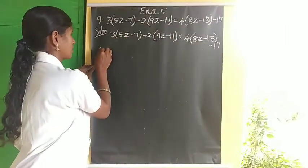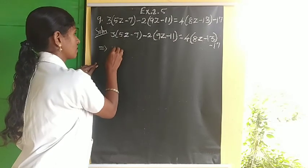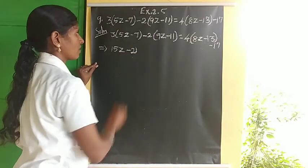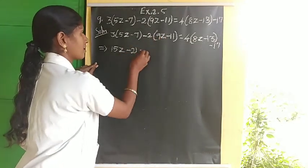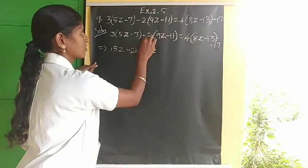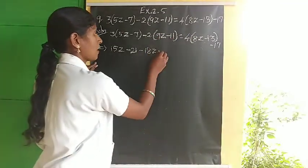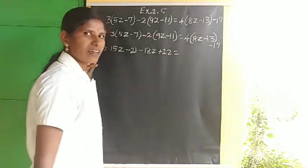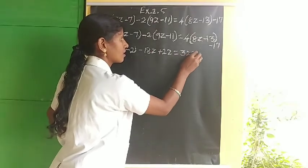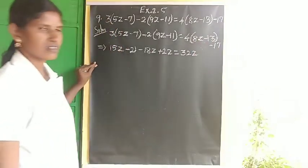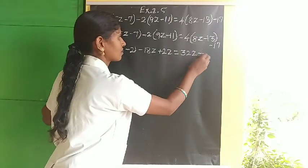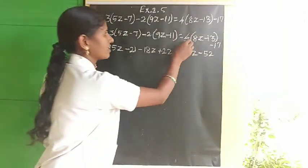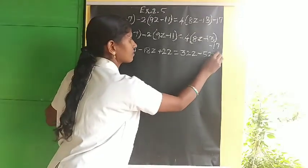On the right side: 4 times 8 gives 32z, 4 times 13 gives minus 52, minus 17. On the left side, simplifying the z terms: 15z minus 18z gives minus 3z. Constants: minus 21 plus 22 gives plus 1. Right side: 32z minus 52 minus 17 gives 32z minus 69.